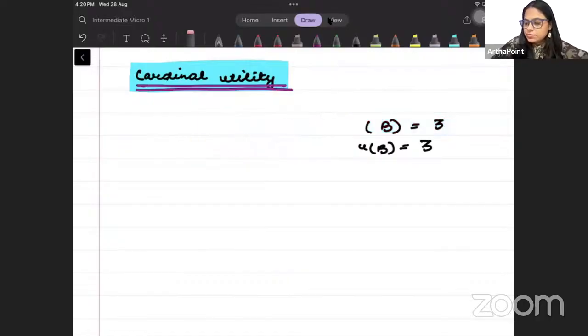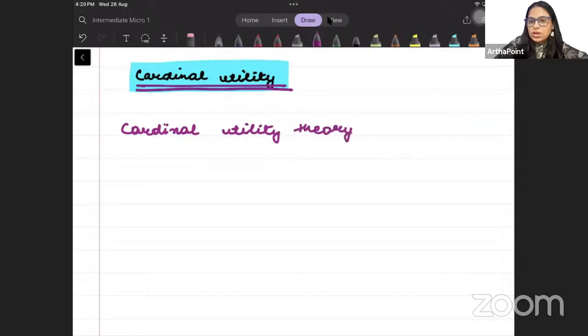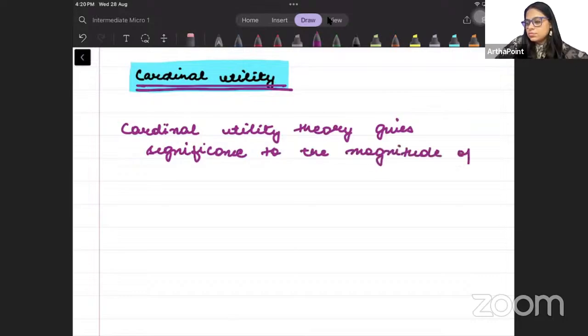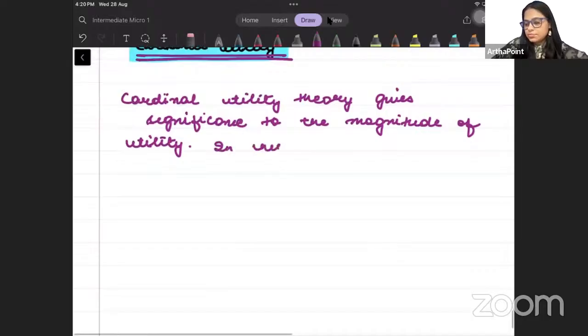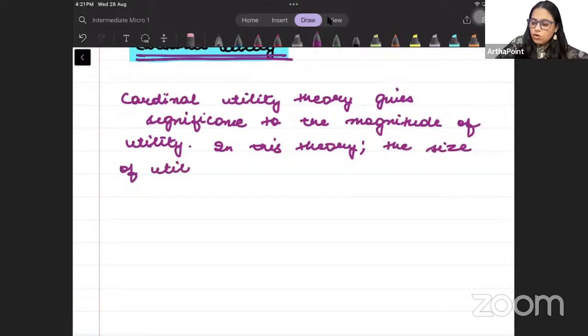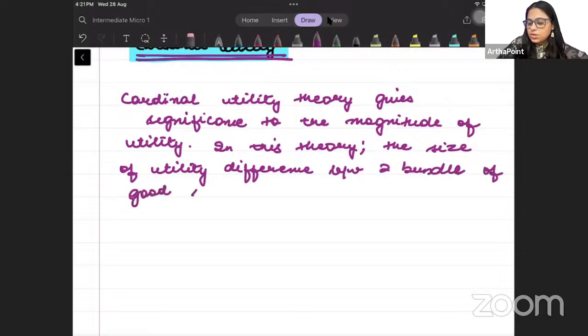So, please write it with me. Cardinal utility theory gives significance to the magnitude of utility. In this theory, the size of utility difference between two bundles is significant.